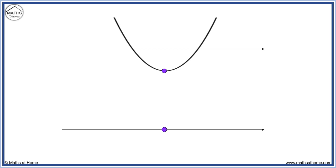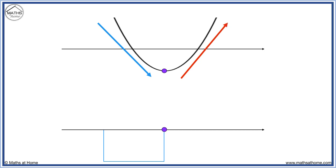Now we look at whether the graph is increasing or decreasing either side of this point. Before the point, the graph is going down from left to right, which means it is decreasing. Therefore, our graph of the derivative will be below the axis before this point. After the point, the graph is increasing, going up from left to right. Therefore, the derivative will be above the axis here.